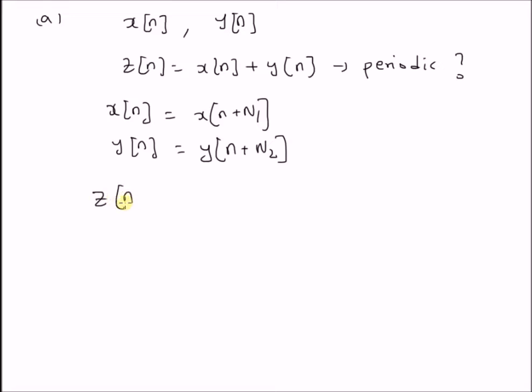Now, the sum z(n) will be equal to z(n + N), where capital N is the fundamental period of z(n), if and only if N is equal to a multiple of N1 and also equal to a multiple of N2. If this condition holds, then the sum z(n) is periodic and the fundamental period of the sum is given by this multiple, that is N1 into capital N1 and N2 into capital N2. Now, let us look at a second example.